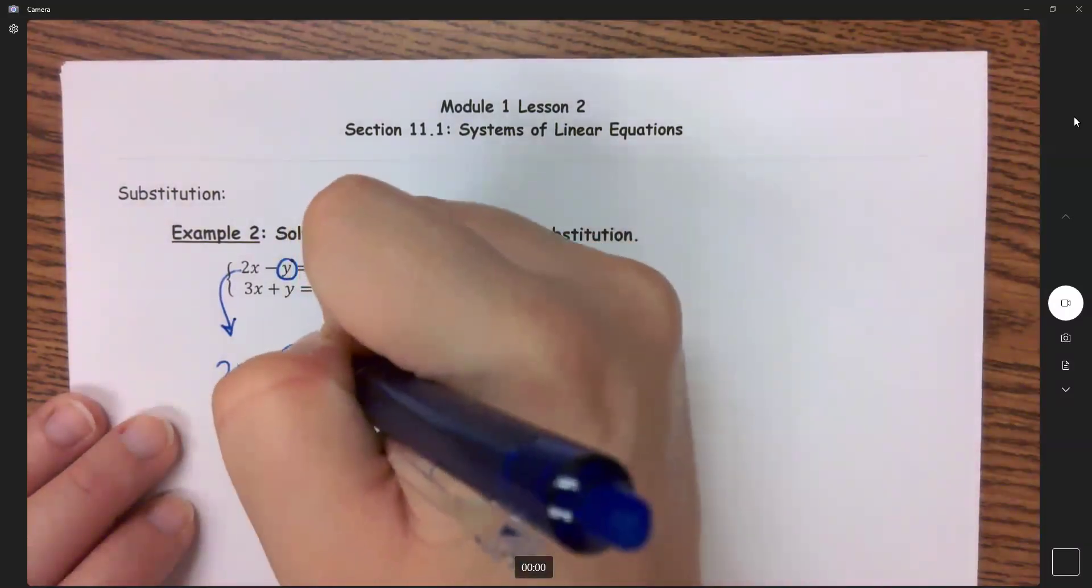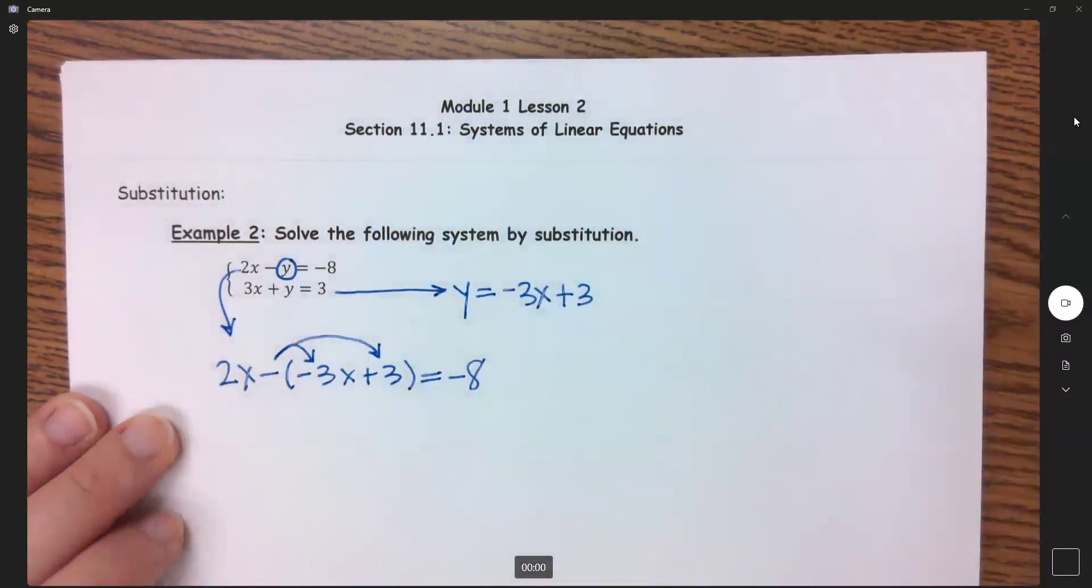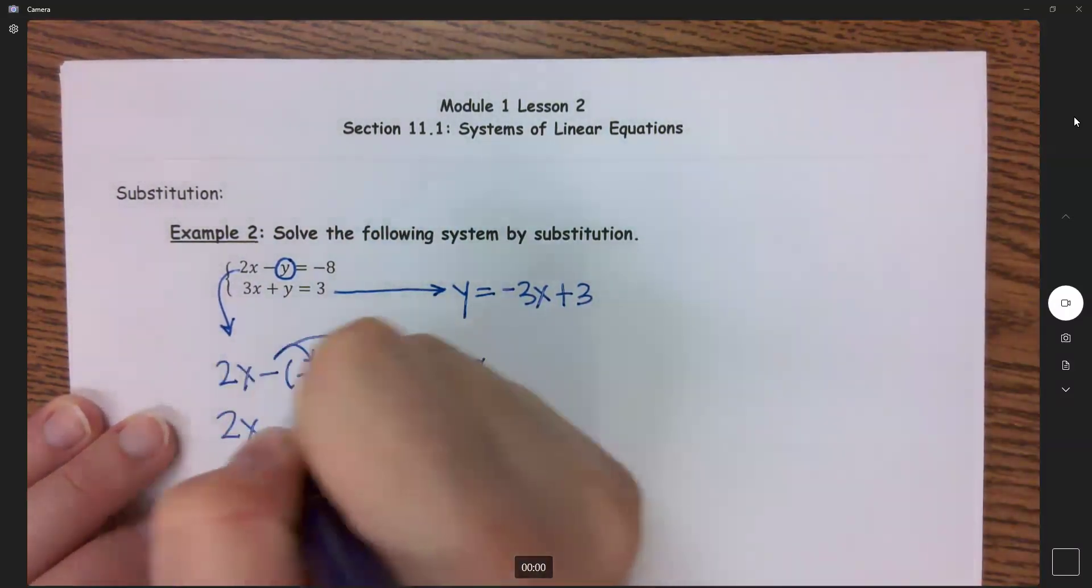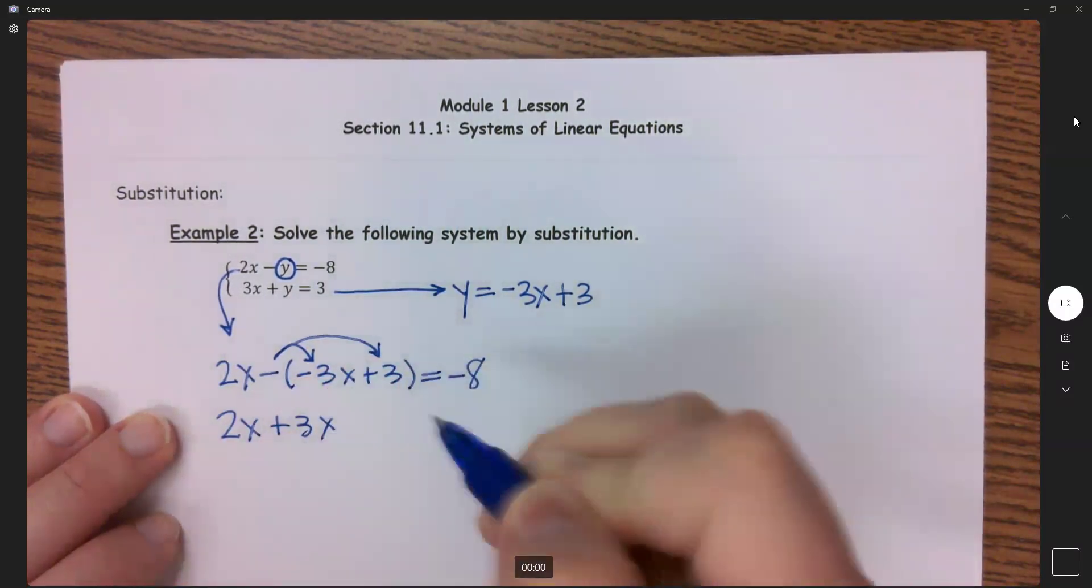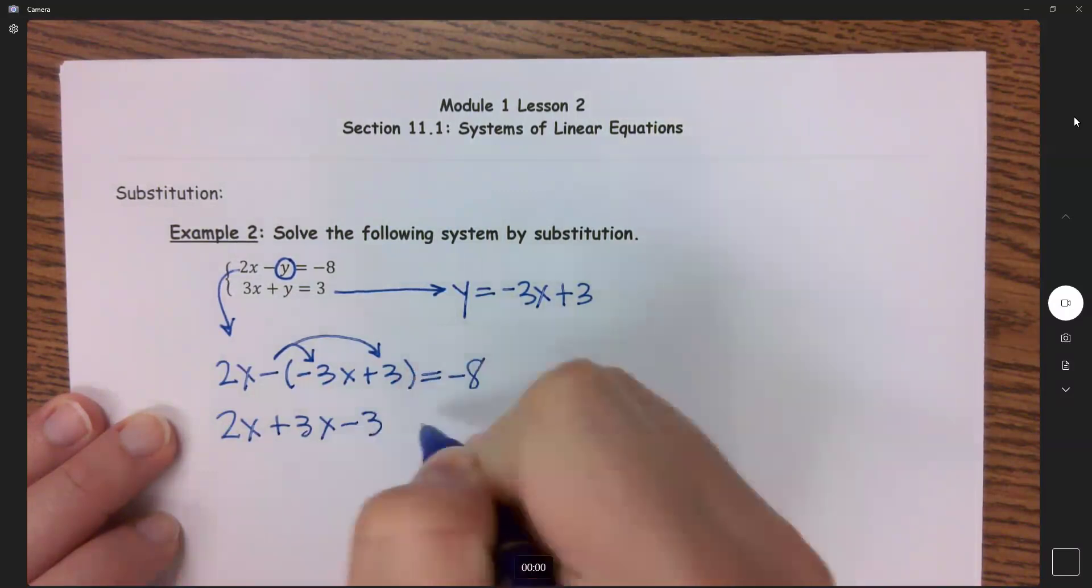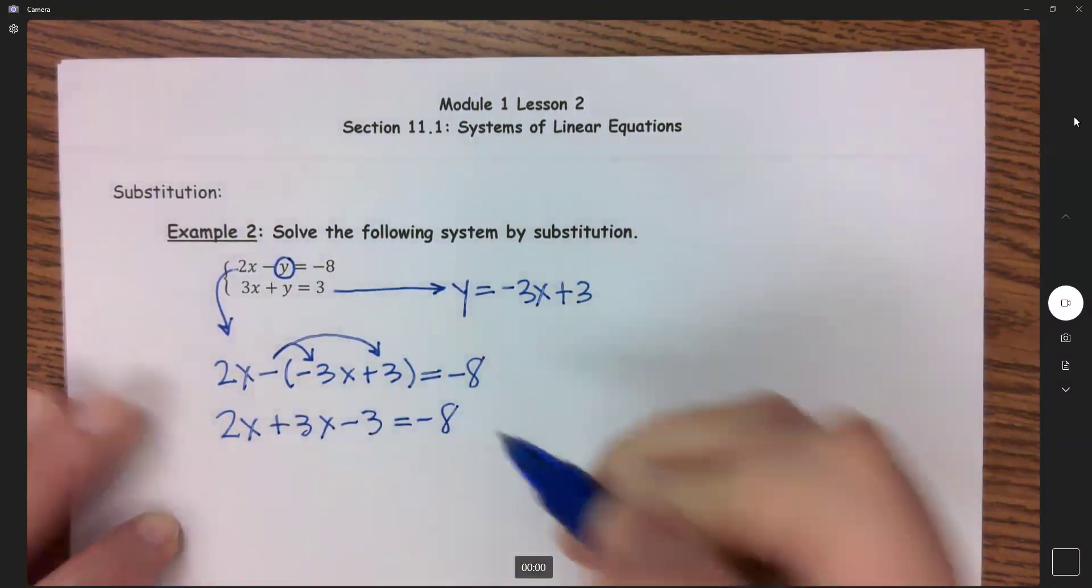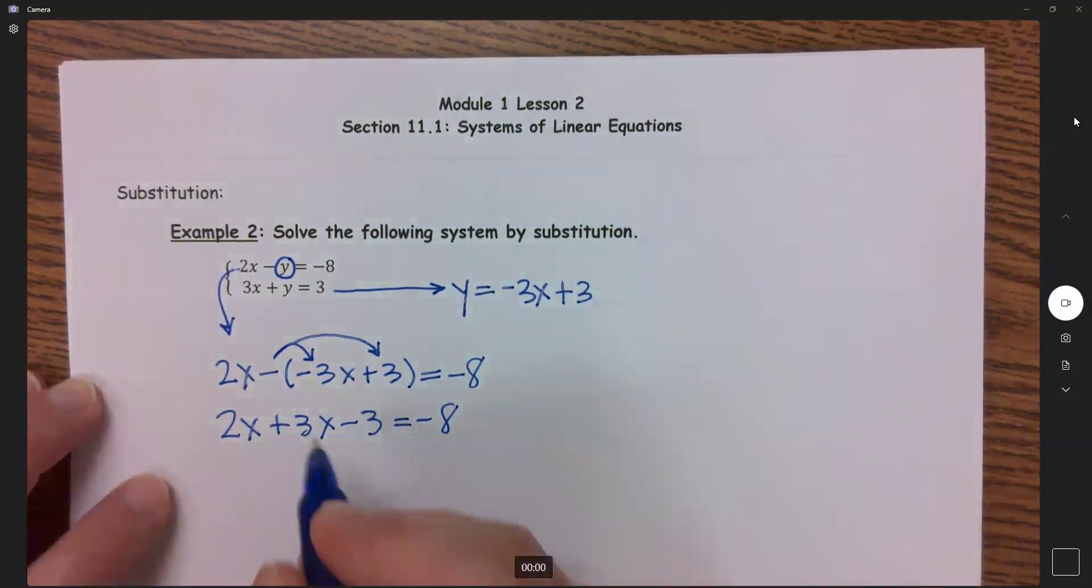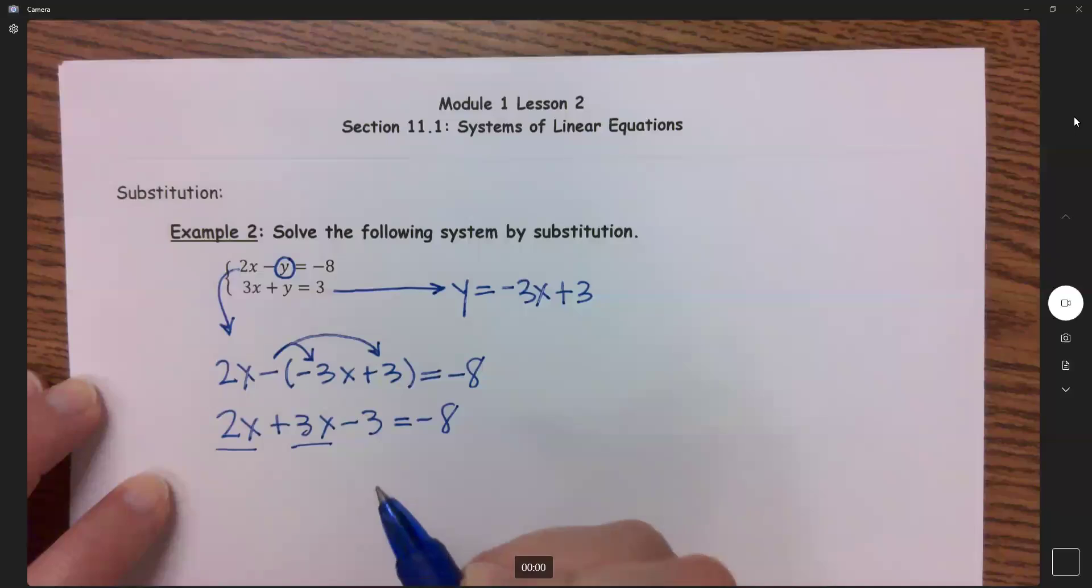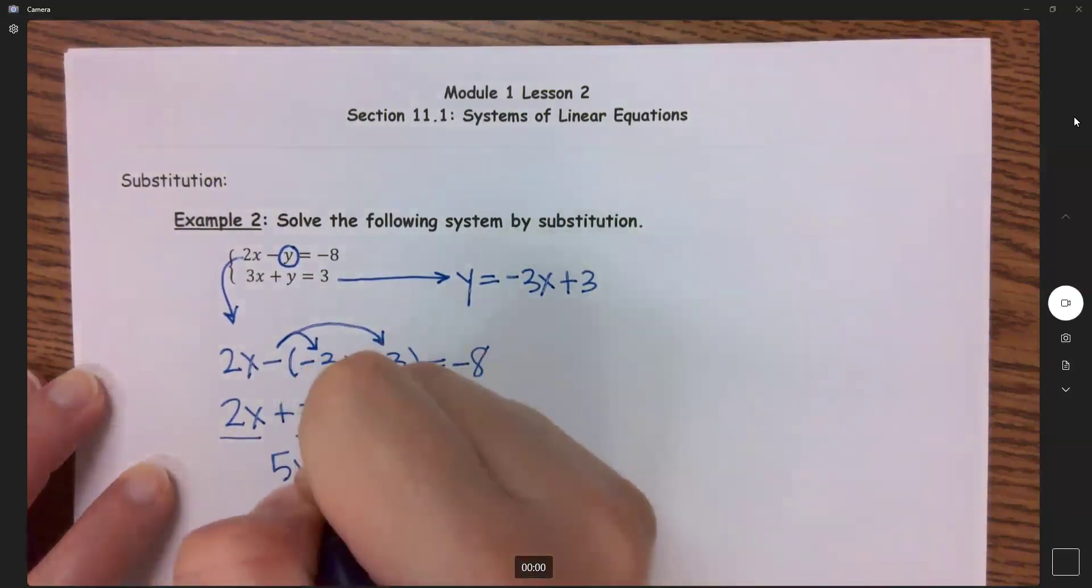So the first thing we need to do is distribute in this negative. Negative times negative makes that a positive 3x and then minus 3 equals negative 8. Combine your like terms. 2x plus 3x gives me 5x.